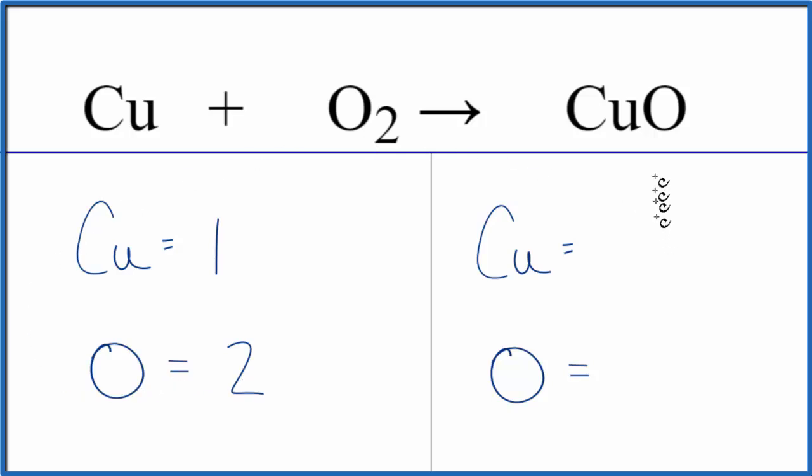On the product side, we have the one copper and the one oxygen. So it looks like we can just put a 2, coefficient of 2, in front of the Cu. This 2 applies to everything. So we have 1 times 2 for the copper and then 1 times 2 for the oxygen. So we balance the oxygen atoms.